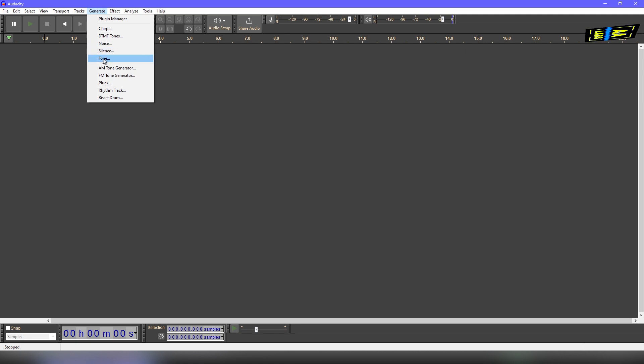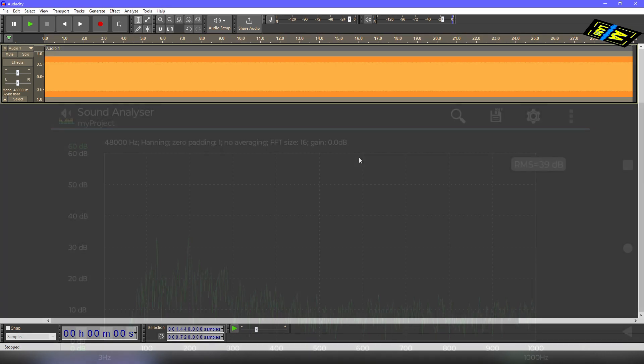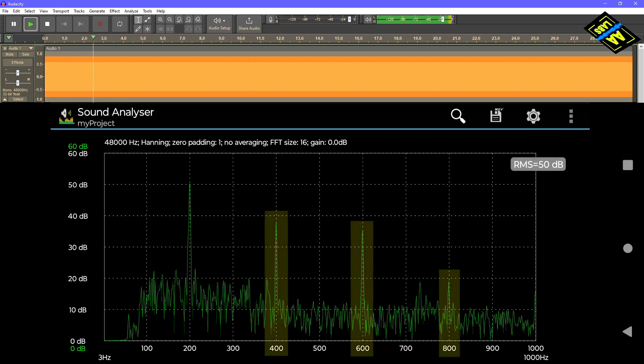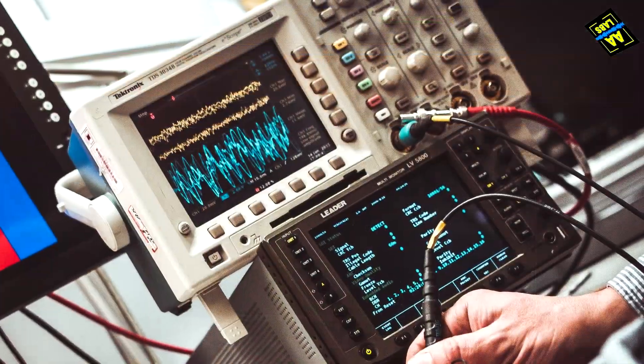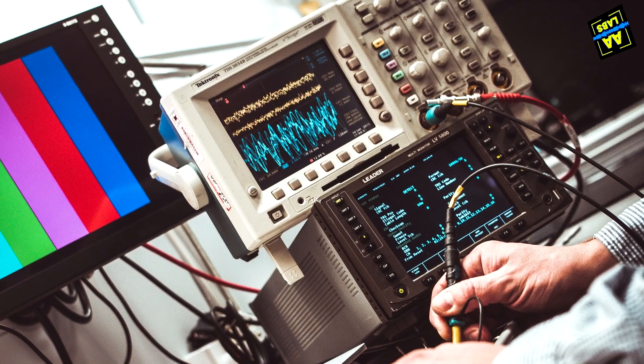If you generate a pure tone with a single frequency on a computer and play it over a speaker into an audio spectrum analyzer, you'll probably still see harmonics. Why? Put simply, harmonics occur whenever signals pass through non-linear systems.